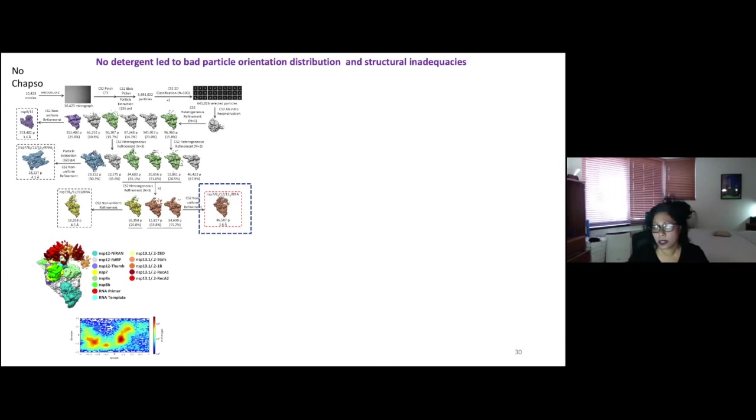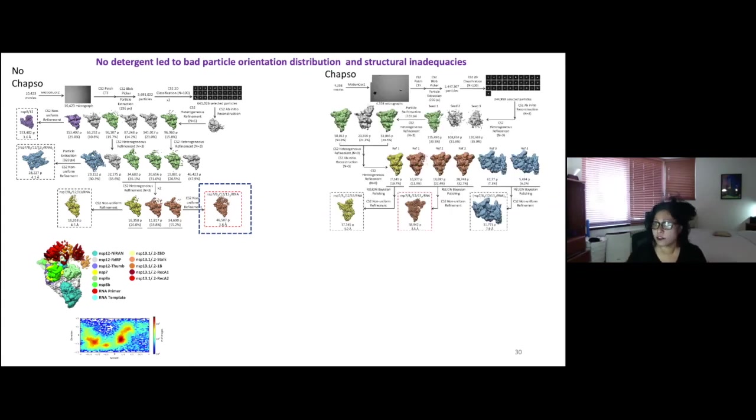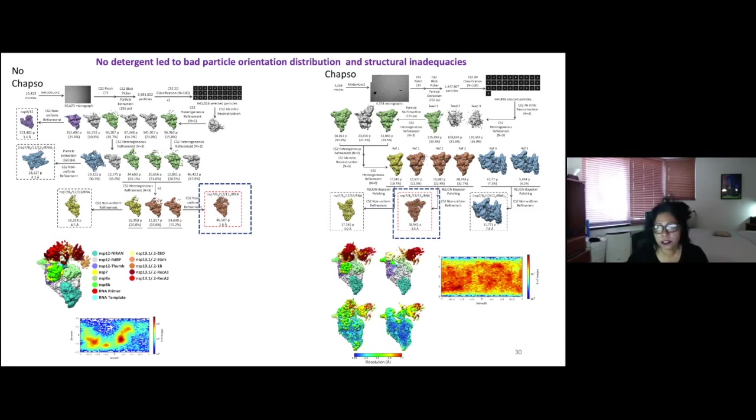And that's because the particles do not orient well on our grids without CHAPSO. So in other words, you're seeing a biased view. If you add CHAPSO like we do for the bacterial polymerases, you get something of similar resolution.